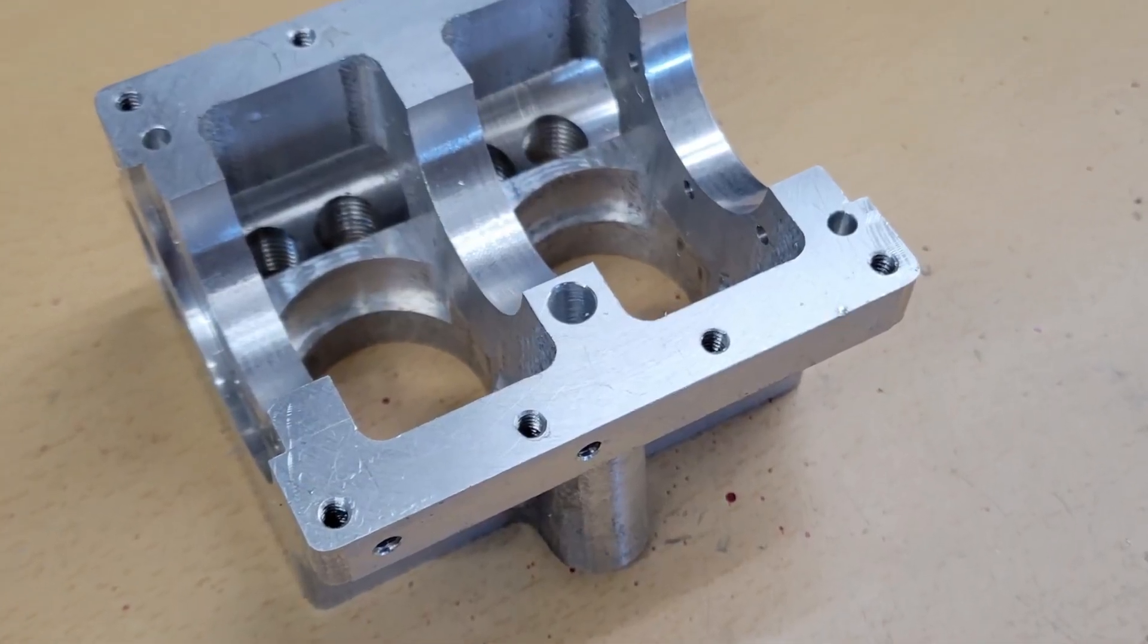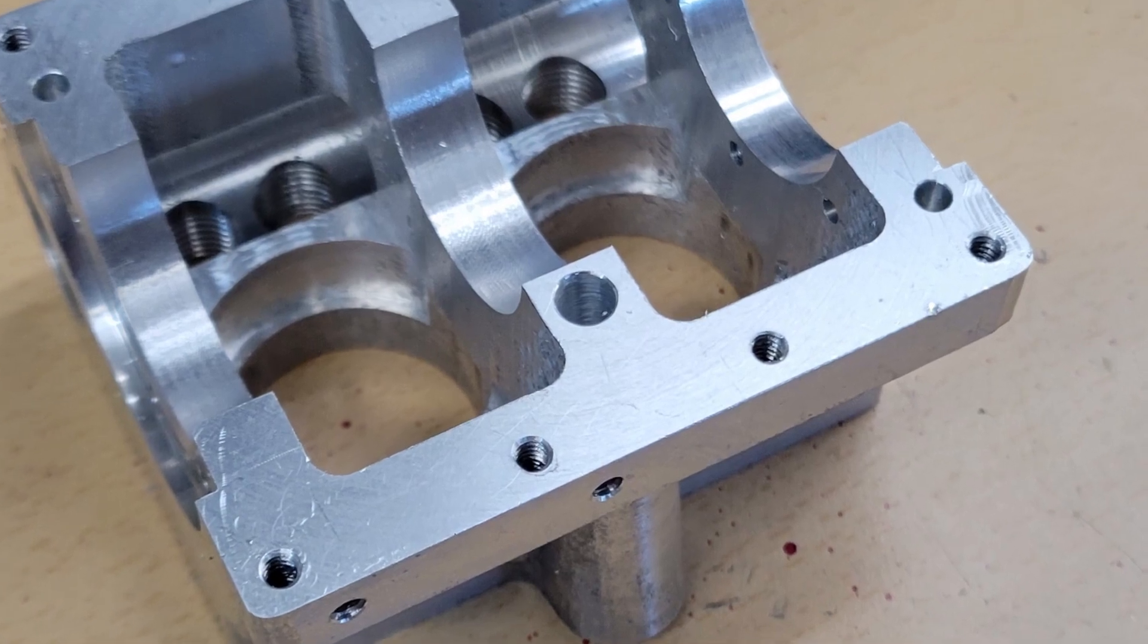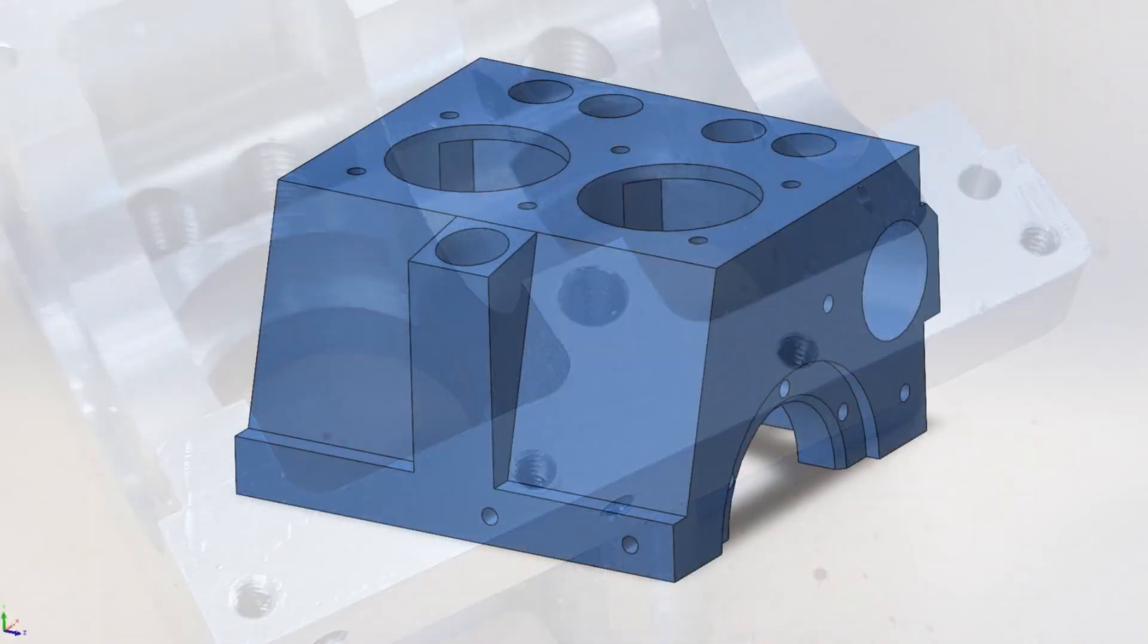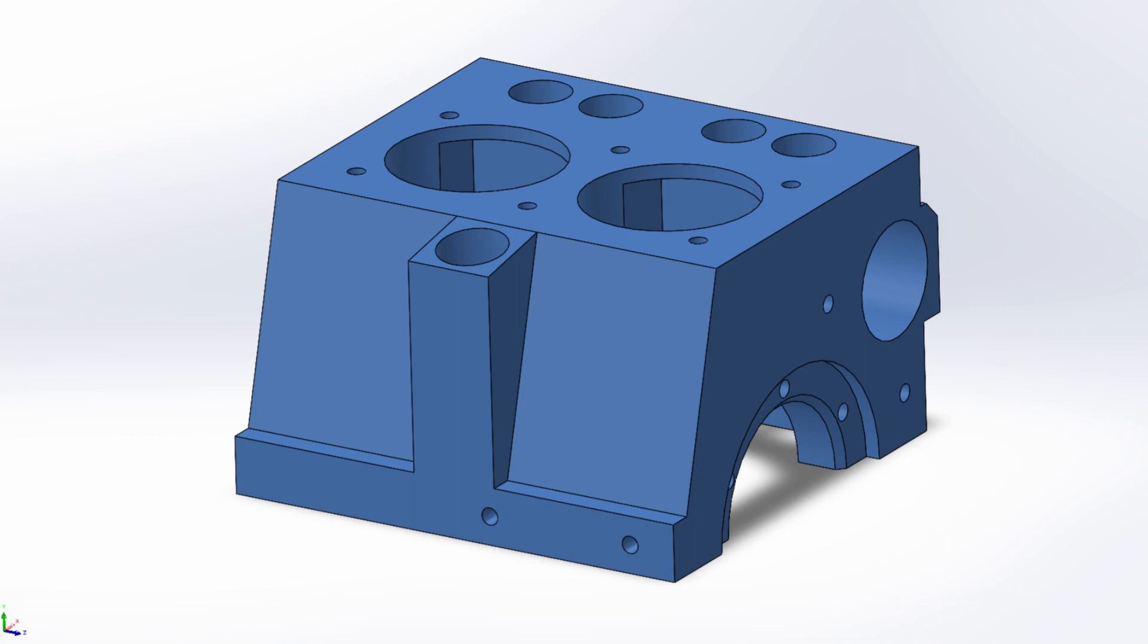Notice where the dipstick hole exits the bottom of the crankcase. And then to finish up the right side of our crankcase, we'll take a file and round off the edges.